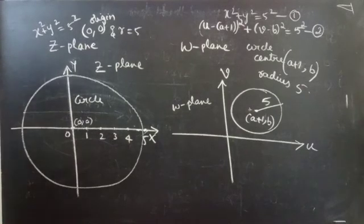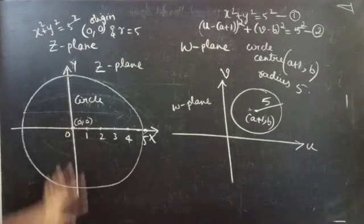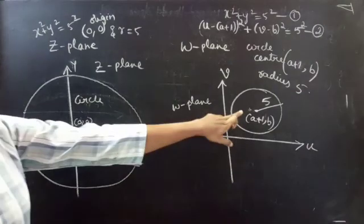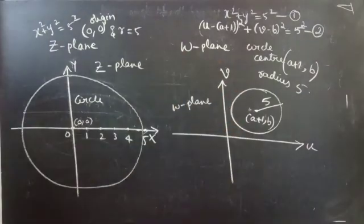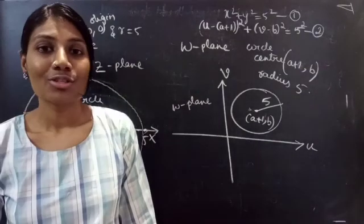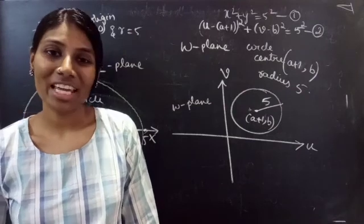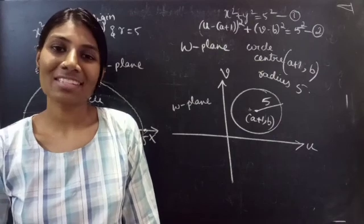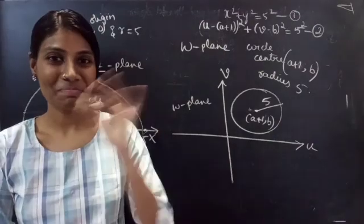So here the shape doesn't change — the circle is transformed to a circle in the omega plane. The circle remains the same shape. We have seen this problem in the video. Hope you understand. We will see you in the next video. Until then, bye bye.